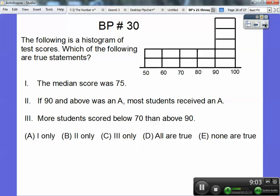The following is a histogram of test scores. Which of the following are true statements? The median is 75. Let's see. Here's 2, 4, 6, 8, 9, 10, 11, 12, 13. So the median would be the seventh number, which is somewhere here. So the median score is not 75. If 90 and above was an A, most students received an A. Well, the deception is that most students didn't receive an A. There's 5 students that received A's, but there's 8 students that didn't receive A's. More students scored below 70 than above 90. Only 4 students here and 5 students scored above 90 right there. So it's not that one either. So none of those guys are going to be true.